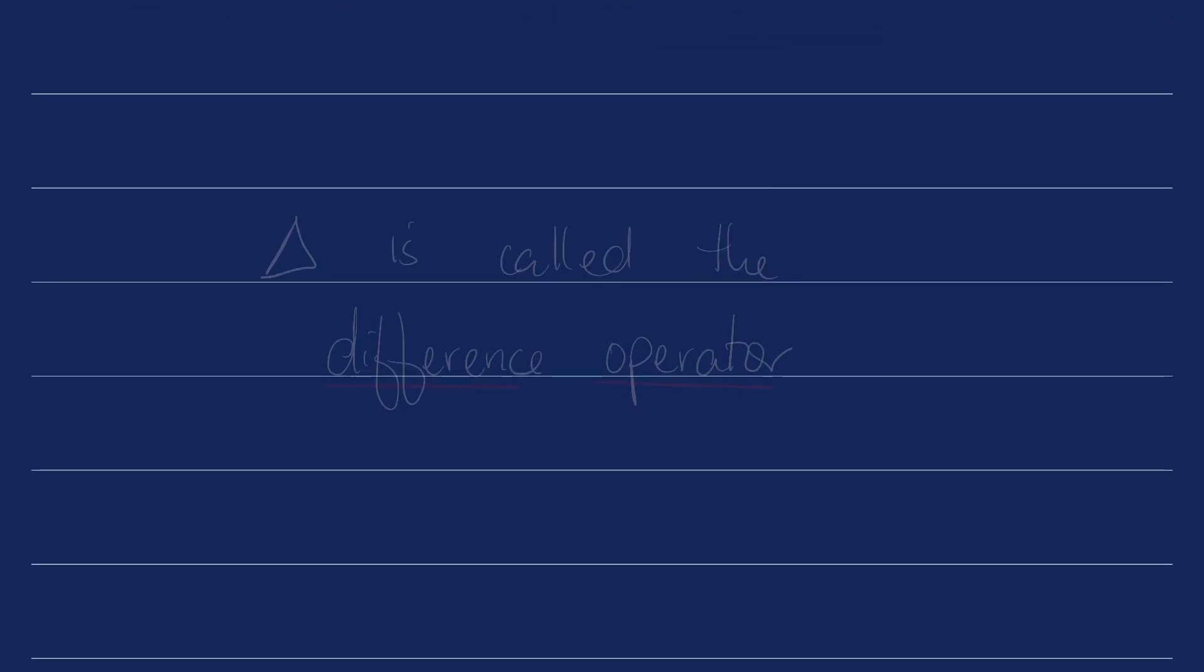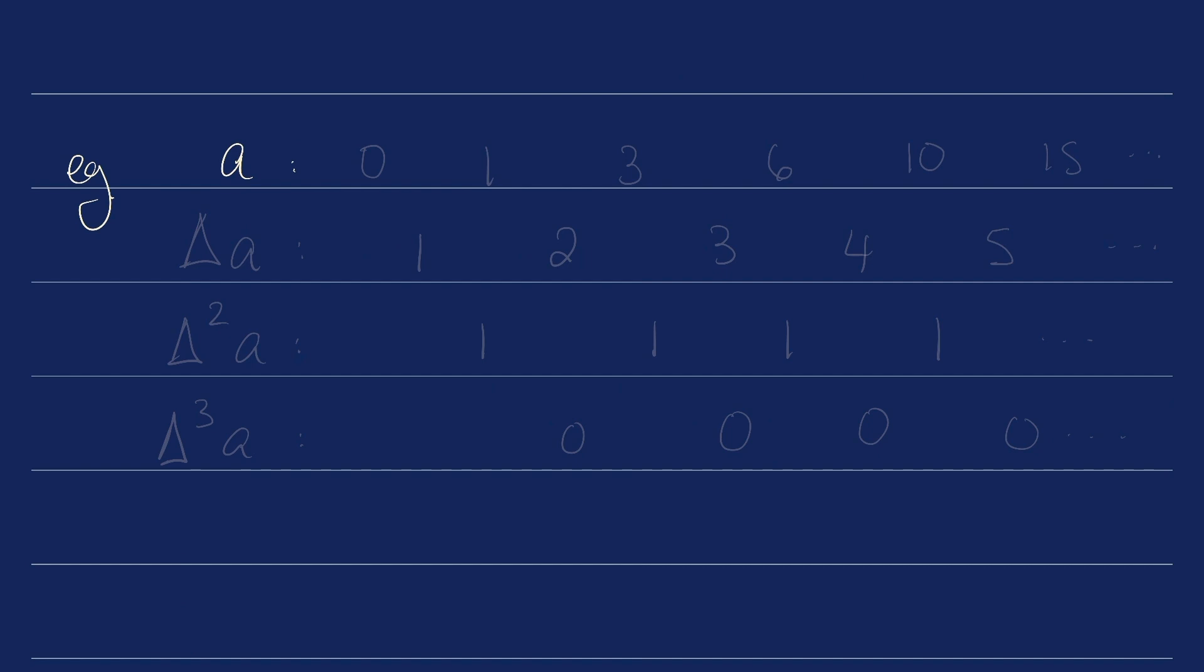Just for notation's sake, this delta is called the difference operator, and in fact you can apply it to a sequence more than once. Example: let's start with a sequence a which goes like so: 0, then 1, then 3, then 6, then 10, then 15, etc.